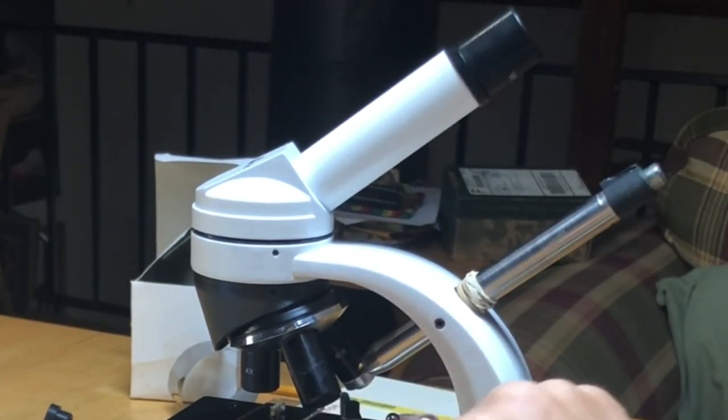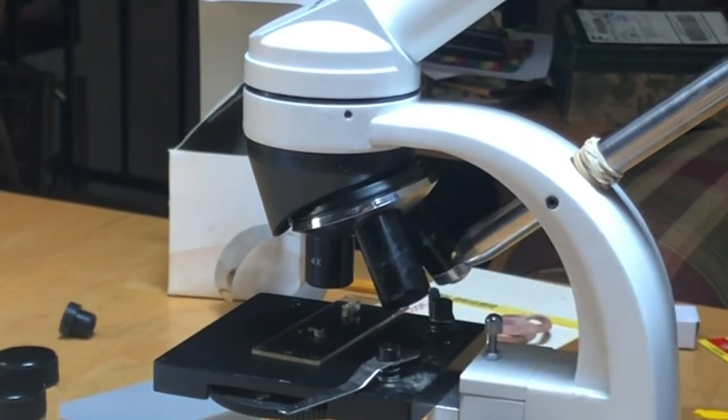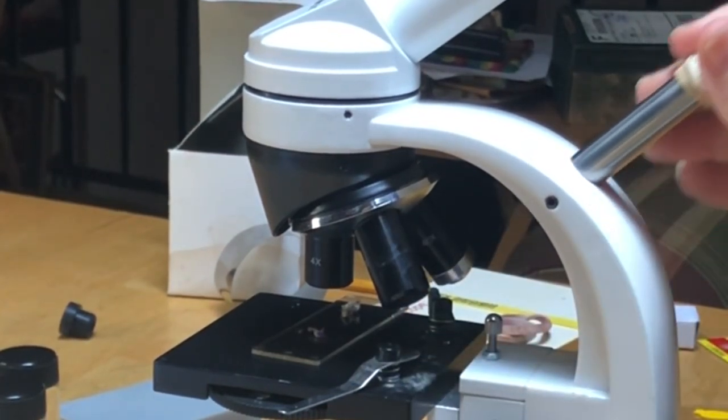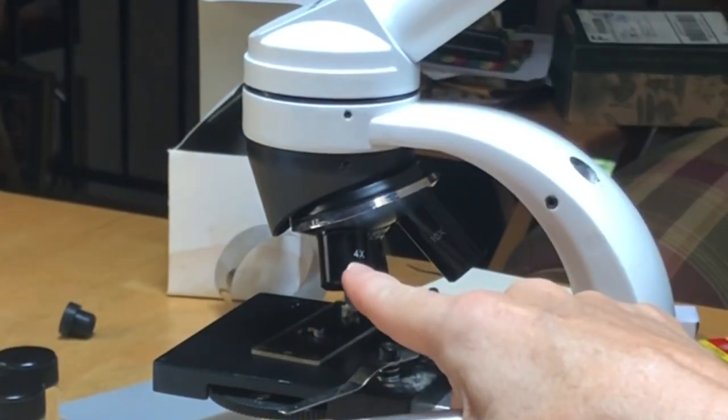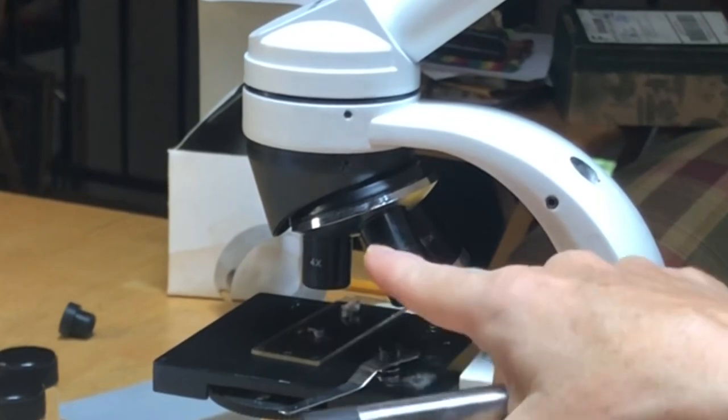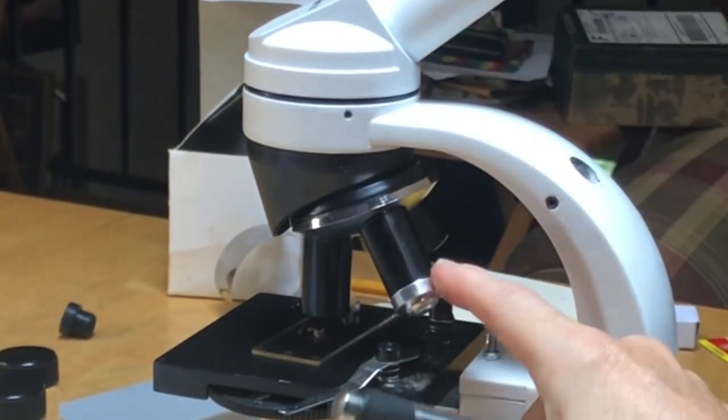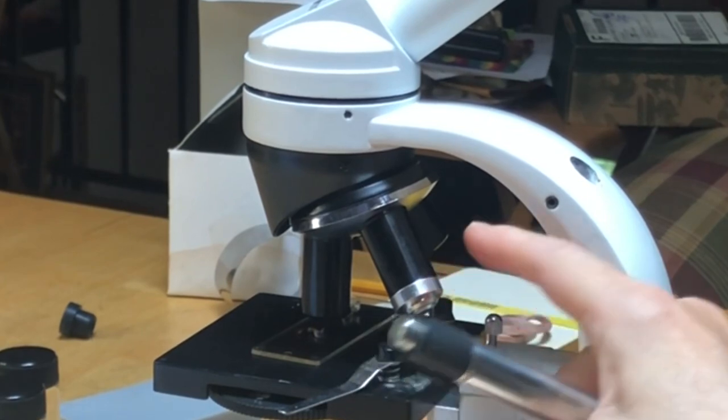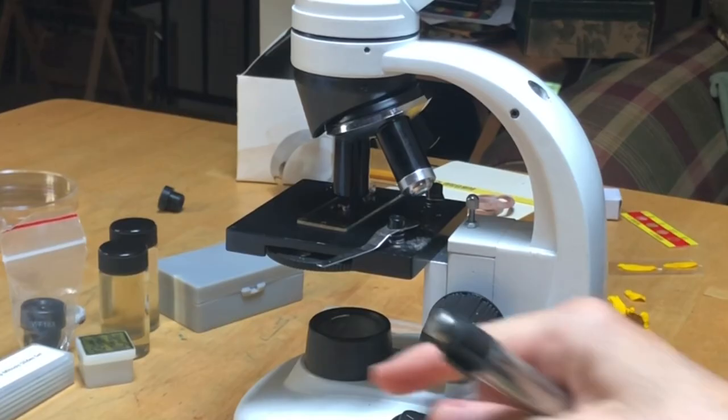And these are the objective lenses. Usually you have two to three objective lenses here. I have three and they rotate. I have a four times, a ten times, and a forty times. But my forty times, you can see it is slightly different with this down here. This is an oil immersion lens.